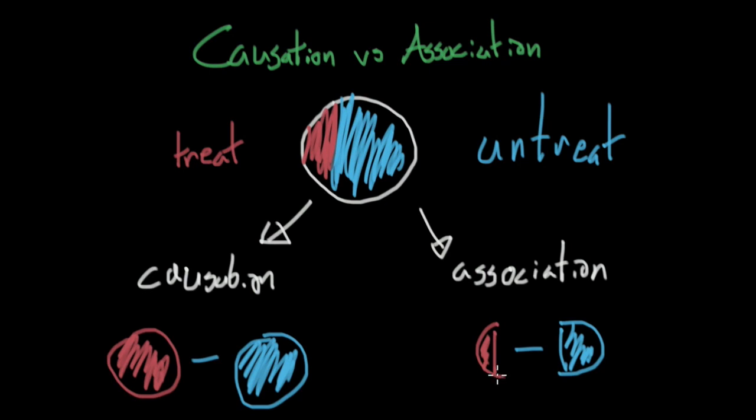For example, the population of people that are at hospitals tend to be much, much sicker than the population of people that aren't at hospitals. And so for this very reason, causation doesn't necessarily equal association.